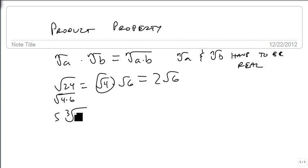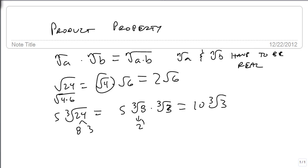Likewise, if we have 5 times the cube root of 24, we can break this up as 8 and 3. So 5 times the cube root of 8 times the cube root of 3. And the cube root of 8 is 2, so this becomes 5 times 2 is 10, cube root of 3. So notice I multiplied what came out by what was already out to get my answer.